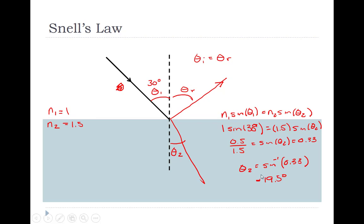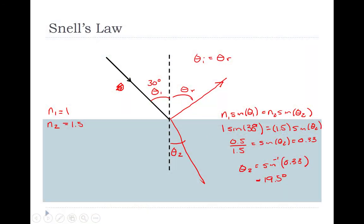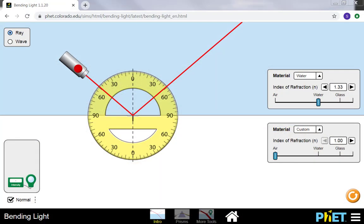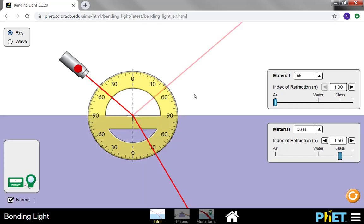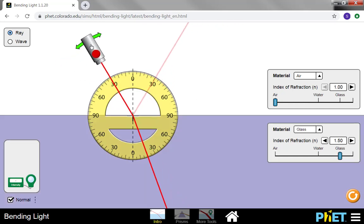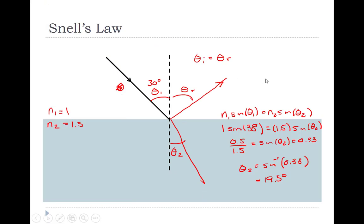Let's go check that on our simulation. So we went from air to glass at 1.5. Our incident angle was 30 degrees, and our refracted angle is right around 20, 19.5. So that is consistent.